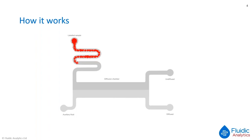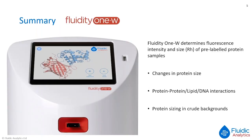So, back live now. The video described how it works: we look at interactions by measuring the size of the labelled species, then titrate in binding partners, which increases the size of the labelled species. We measure that new size, and by doing this across a series of concentrations we get the titration for the KD. The instrument is the Fluidity 1W, which measures change in protein size. It works for protein–protein, protein–lipid, or protein–DNA interactions, and importantly also works in crude backgrounds because only the pre-labelled protein of interest is detected.